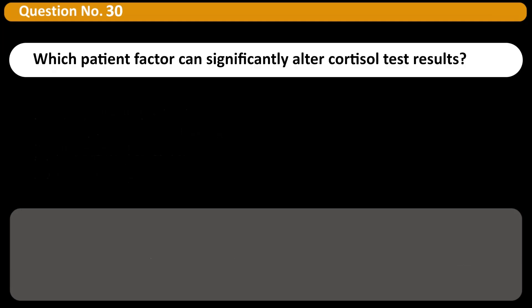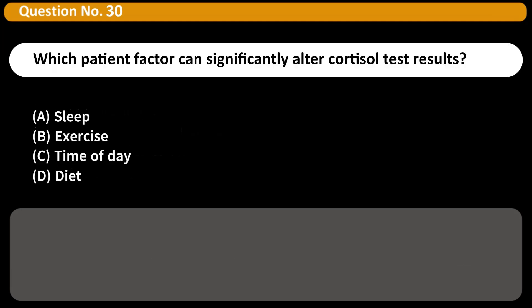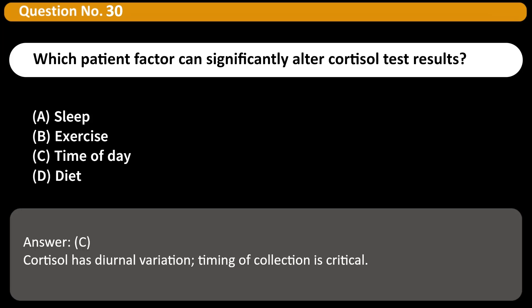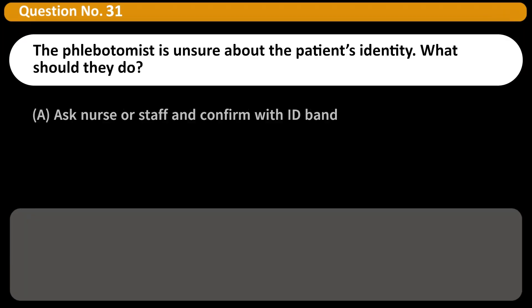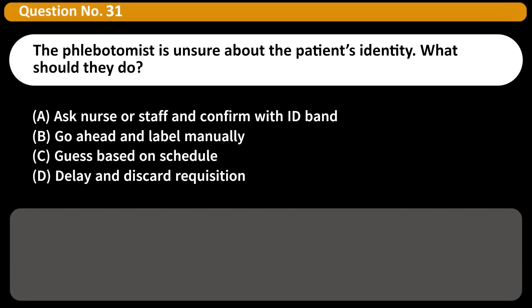Which patient factor can significantly alter cortisol test results? A. Sleep. B. Exercise. C. Time of day. D. Diet. Answer: C. Cortisol has diurnal variation. Timing of collection is critical.